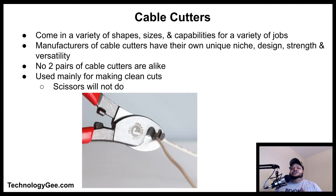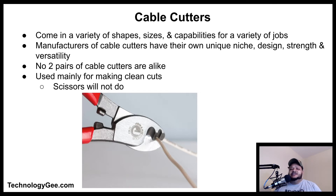One tool you should have is a good sharp cutting tool — cable cutters. They come in all shapes, sizes, and capabilities for a variety of jobs, whether the jobs involve copper, aluminum, or coaxial cable. Manufacturers have their own unique niche, special design, strength, and versatility — no two pairs of cable cutters are alike. When you need to make a clean cut on the end of a network cable, scissors simply will not do.